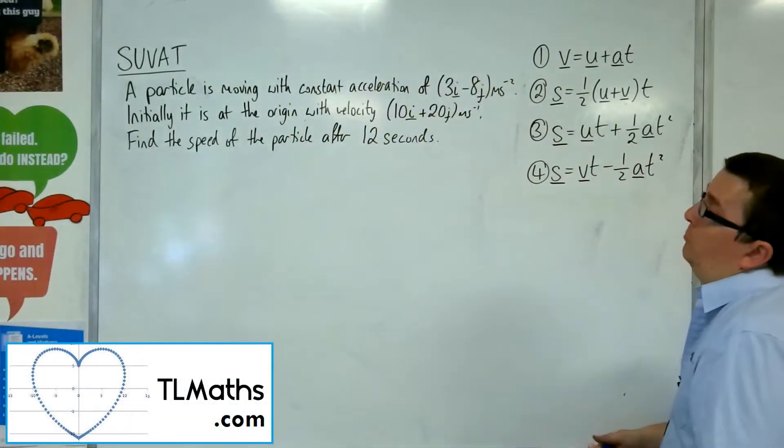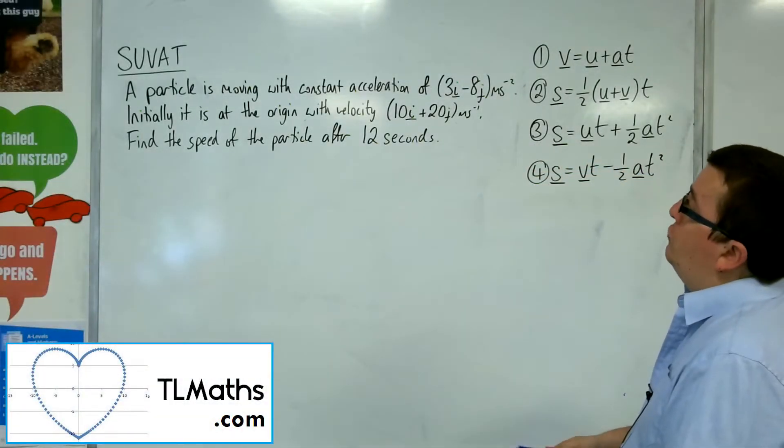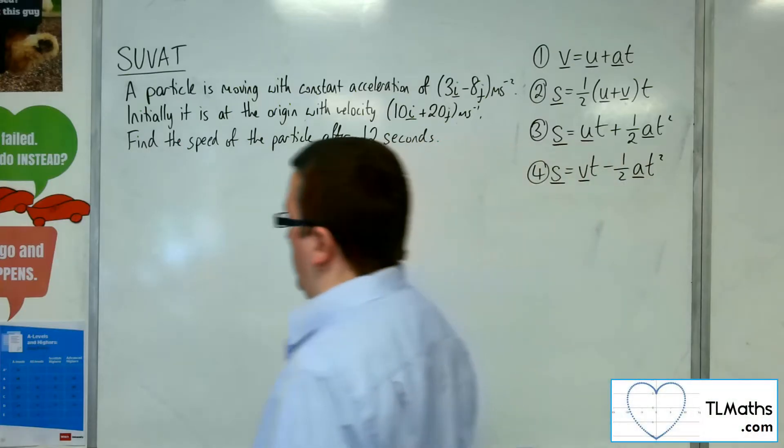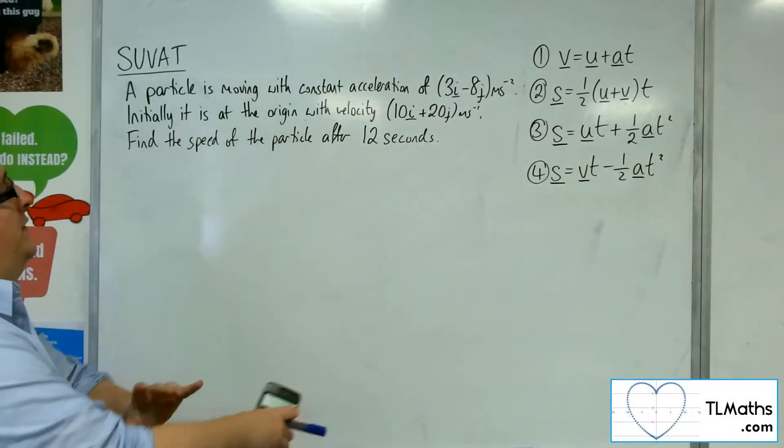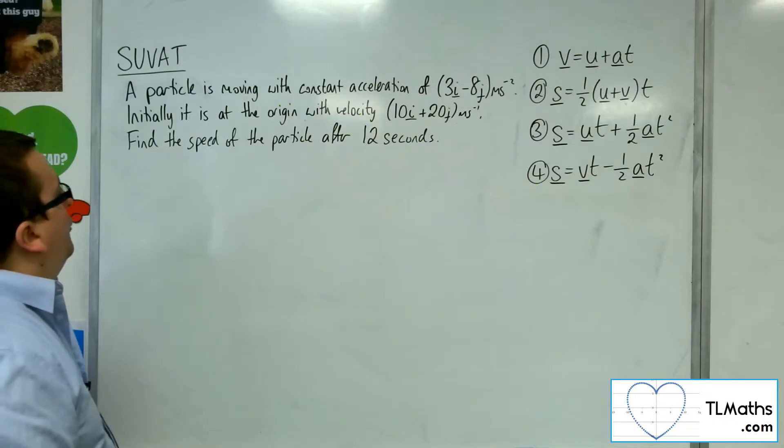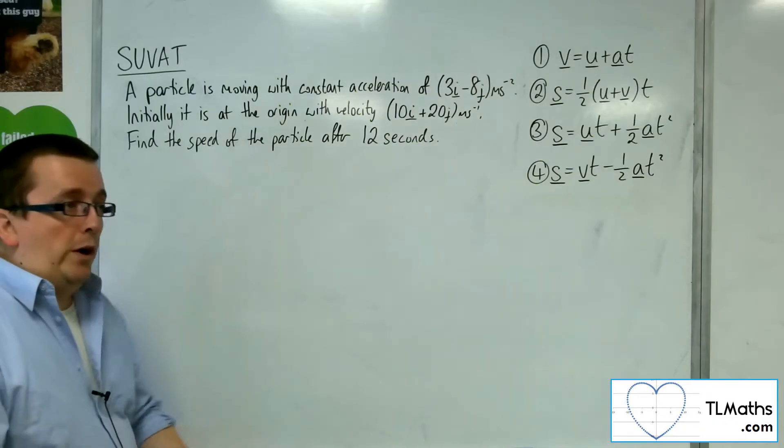In this video, a particle is moving with constant acceleration of 3i minus 8j metres per second per second. Initially it is at the origin with a velocity 10i plus 20j metres per second. Find the speed of the particle after 12 seconds.